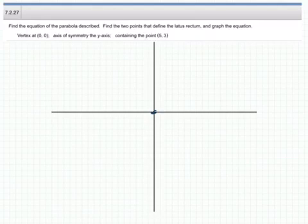The axis of symmetry is the y-axis, and it contains the point x equals 5 and y equals 3.